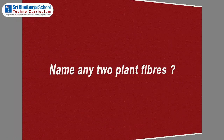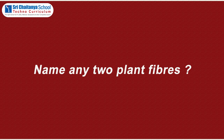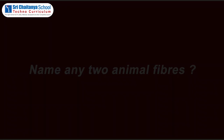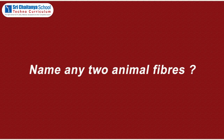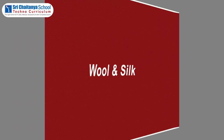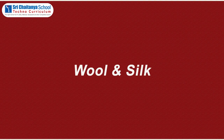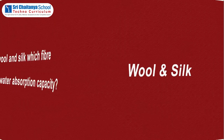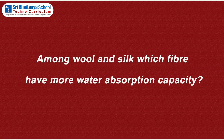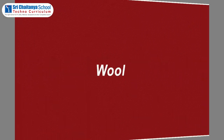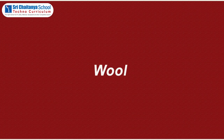Based on this experiment, here are a few questions. First question: name any two plant fibers. The answer is cotton and jute. Second question: name any two animal fibers. The answer is wool and silk. Third question: among wool and silk, which fiber has more water absorption capacity? The answer is wool.